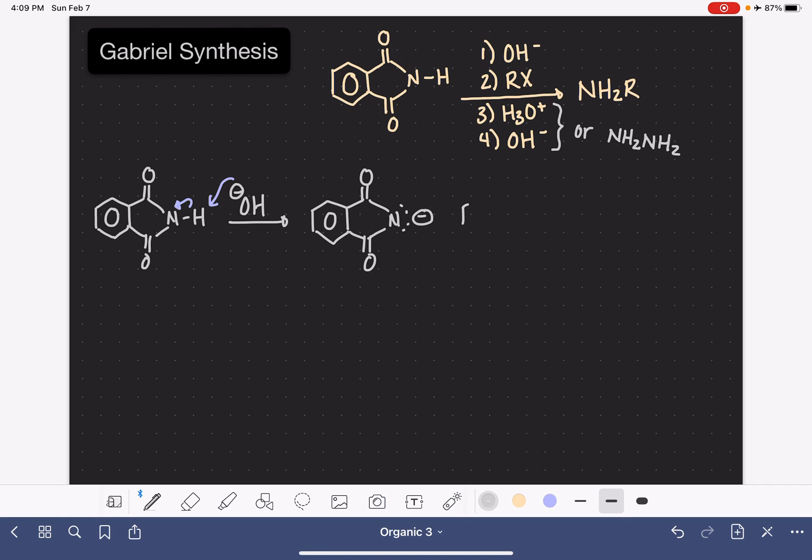And this guy is going to do an SN2 reaction with our alkyl halide. So this is going to put the R group onto this nitrogen, and it is going to give us a cool little amide. So look at what we have right here. We have our amide with an R group present. So that's step 1 and step 2.